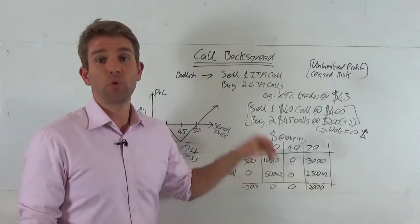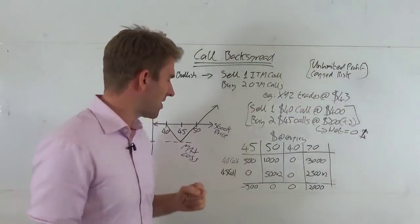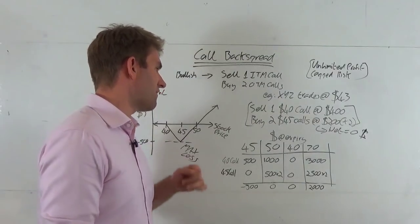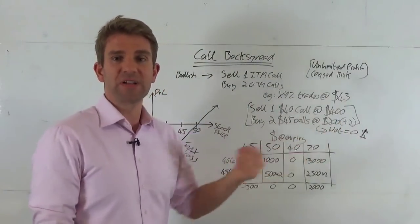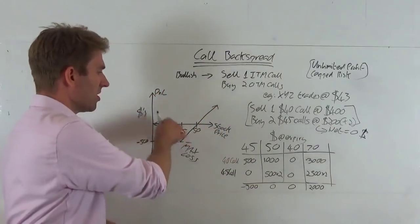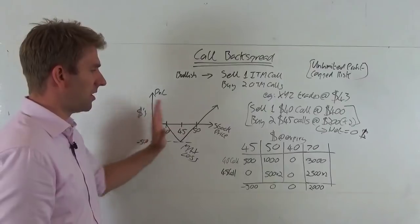Unfortunately, we were short that 40 call. So we've lost a thousand dollars on the 40 call. We've got to pay that out to the buyer of that contract, but we make the thousand dollars on the 45 calls. It's gone up by $5. We're going to exercise that contract and claim our 500 times two. The net is zero. You can see that's with the chart now as well. So we've got this part of the deal all sorted out.